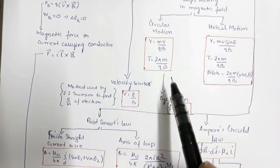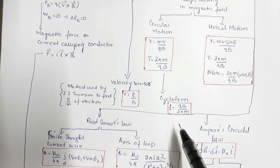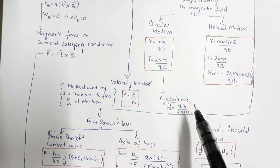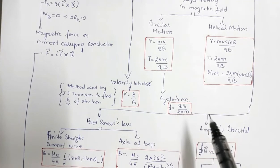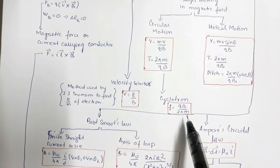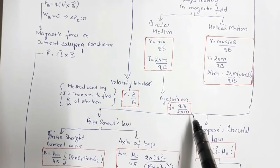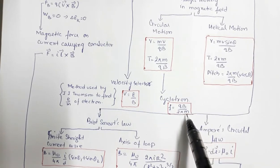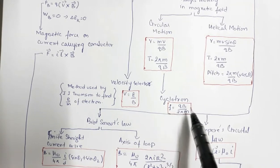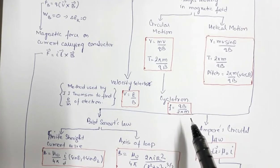Based on circular motion, we have the cyclotron, a device used to accelerate charged particles. The cyclotron frequency is qB/2πm. However, the cyclotron cannot accelerate light particles like electrons, because electrons quickly acquire very high velocity and undergo relativistic variation of mass. When the mass varies, the cyclotron frequency also changes and the resonance condition is no longer attained, making the cyclotron unsuitable for accelerating electrons.